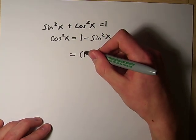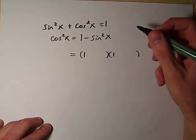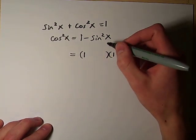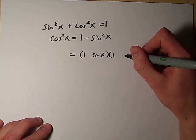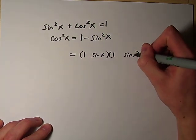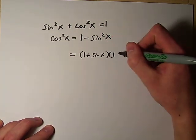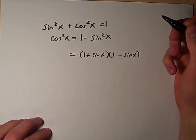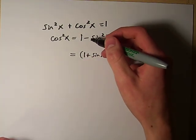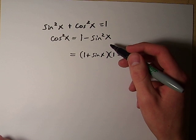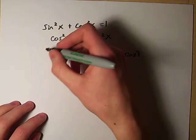So on this side, we're going to have a 1, on this side we're going to have a 1. And then we're going to have a sine x and a sine x. And then we're just going to have a plus and a minus. And that is the factored form of 1 minus sine squared x, which equals cosine squared x.